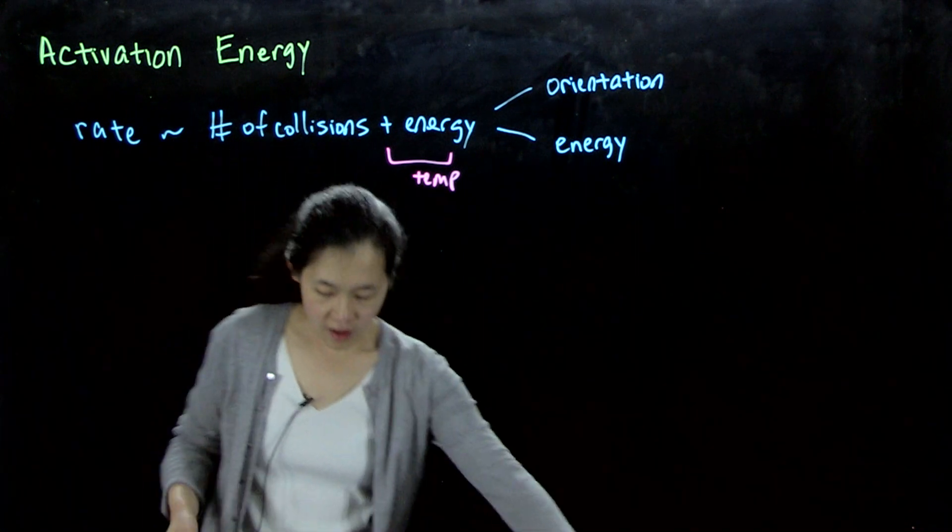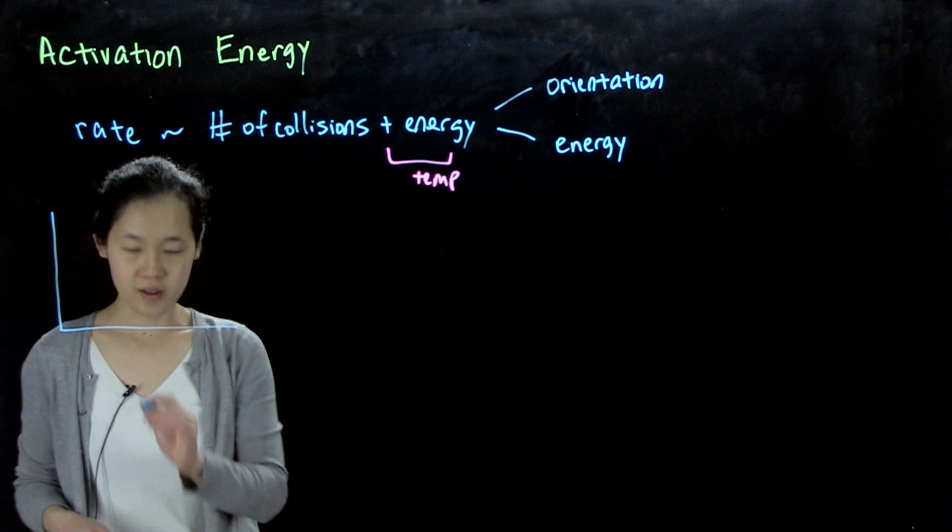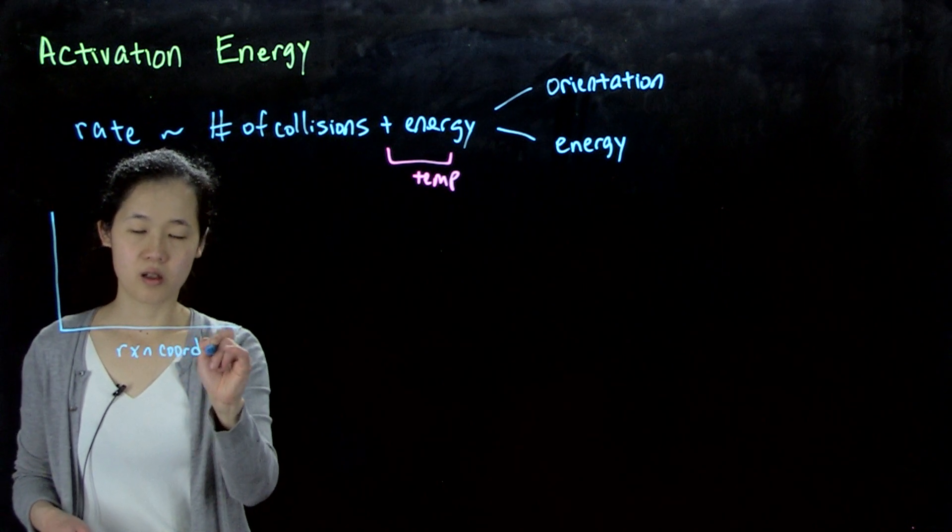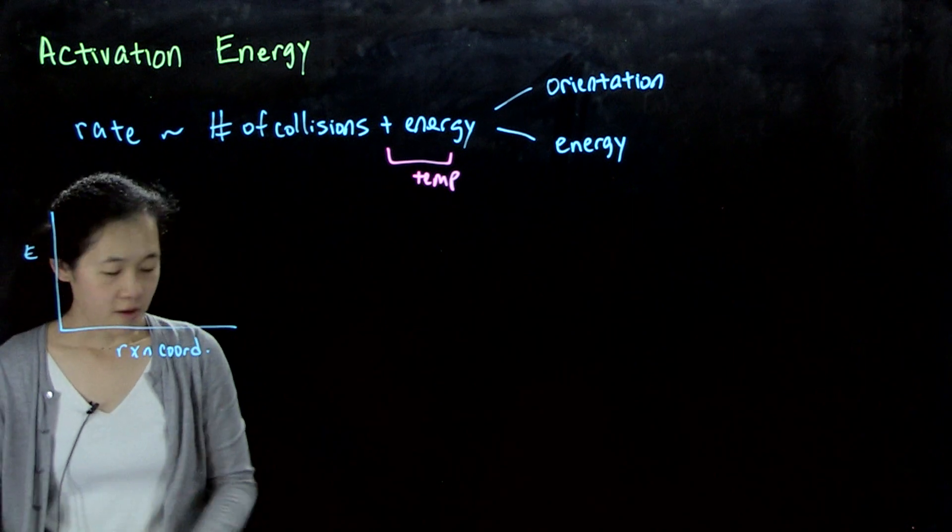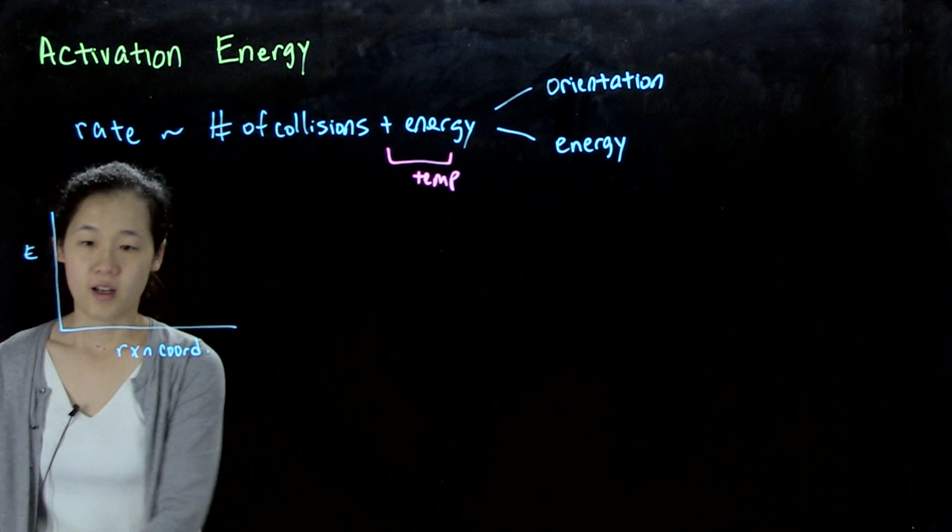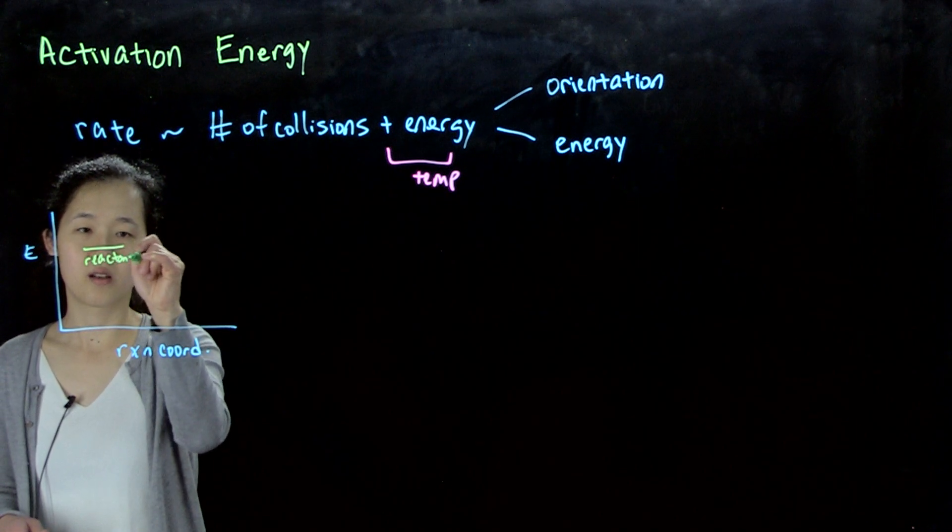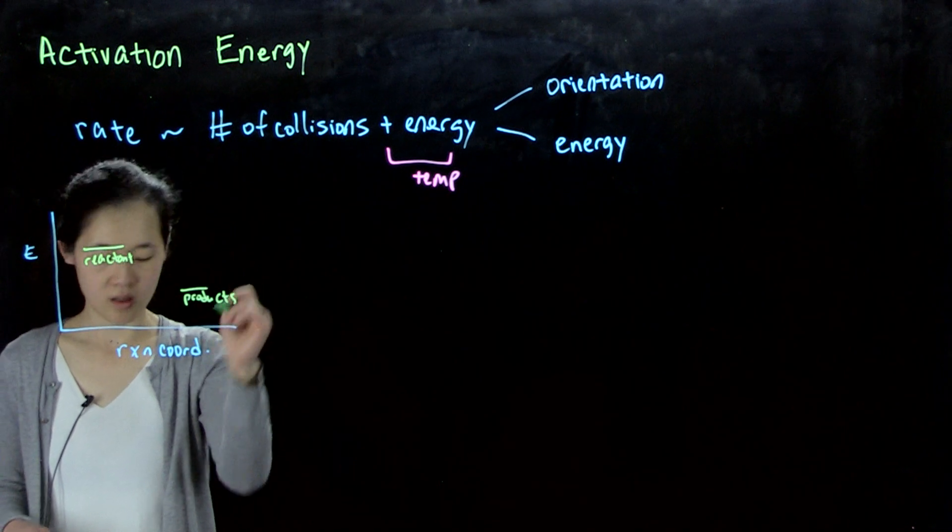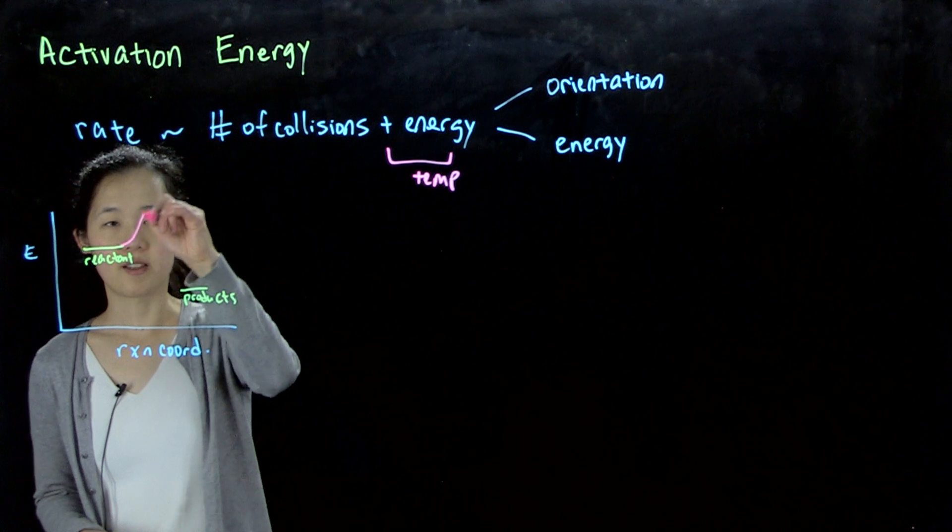So we've shown before, if you think about our reaction pathway, here's our reaction coordinate. We've done before, this is energy. And so for example, a single step reaction that we've shown before, where we have, let's say, here's our reactants, products, and then we have some sort of pathway.